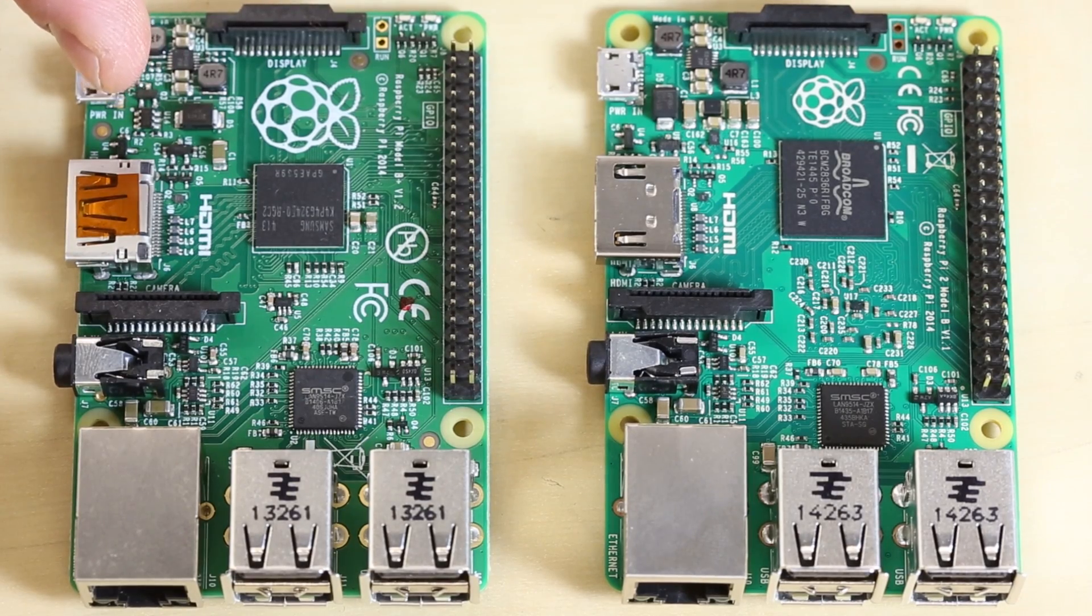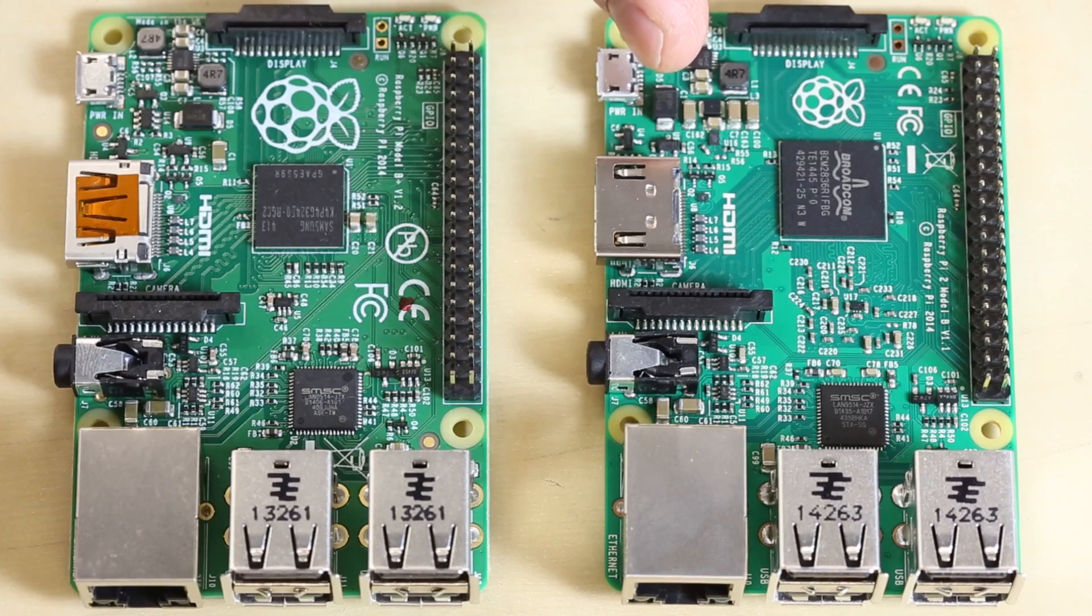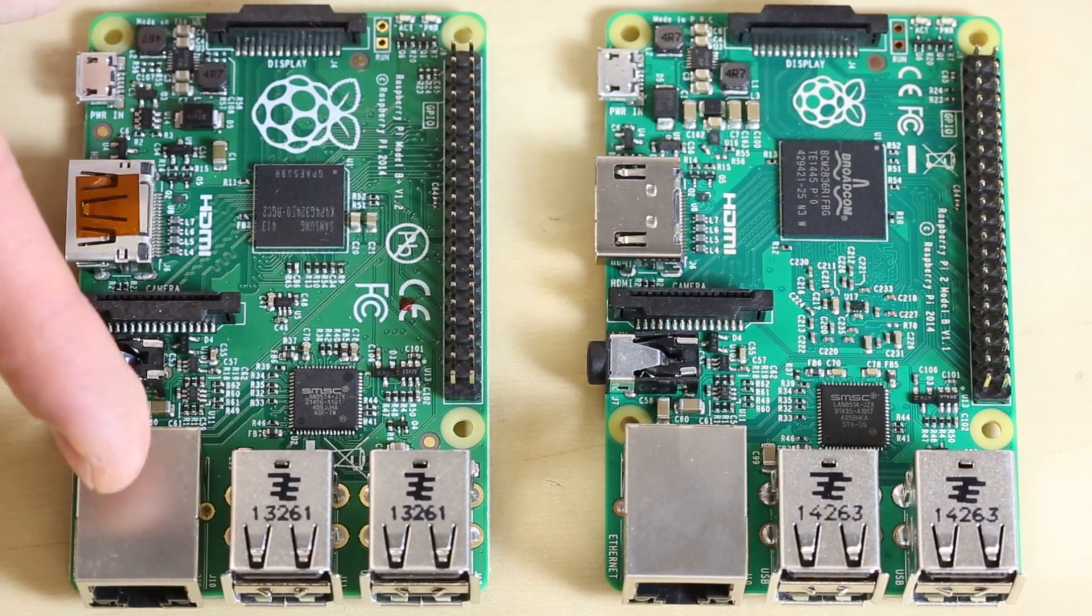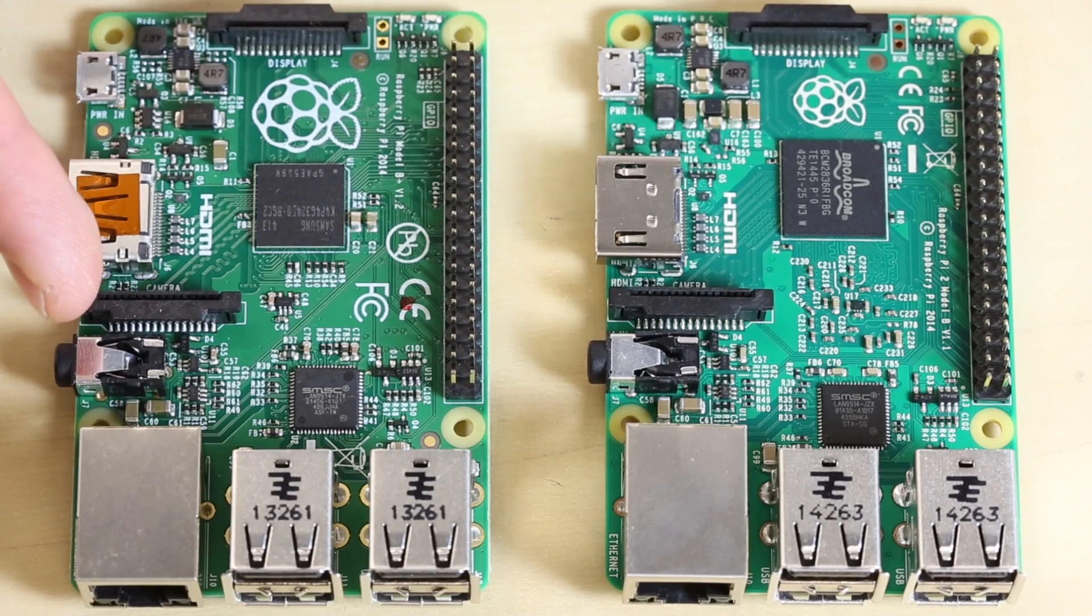I've put a Raspberry Pi Model B Plus next to a Raspberry Pi 2, and as you can tell, they look about the same. Both have the four USB ports, an Ethernet port, and a combination audio-visual jack.